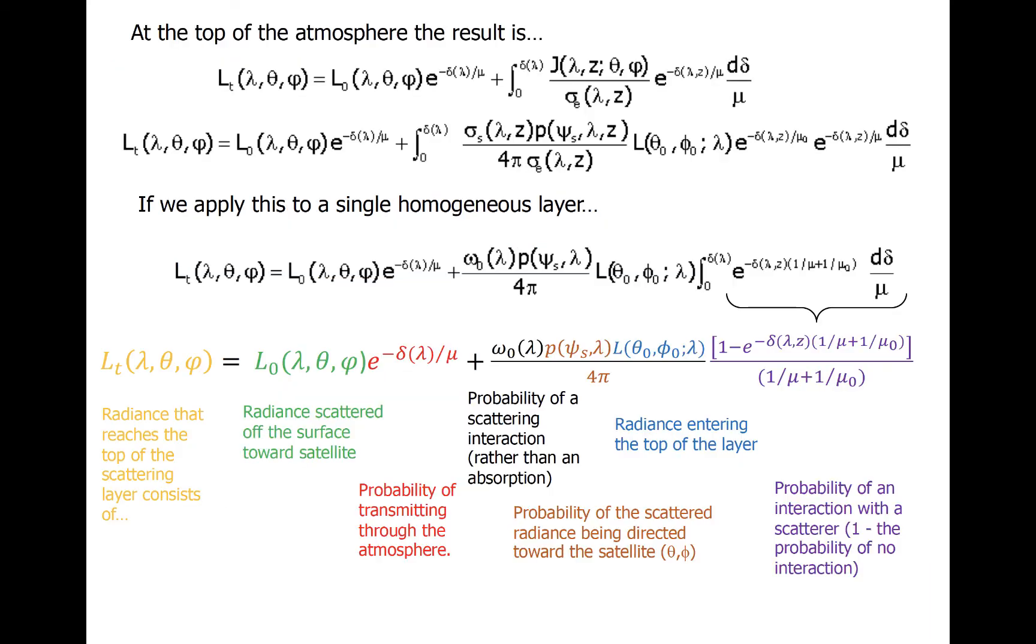We can start with our general form of Schwarzschild's equation and plug in our new expression for the source term. Note here that we have switched the sign convention for the vertical coordinate so that L sub t denotes radiation at the top of the atmosphere outbound and L sub not denotes inbound radiation that is scattered off the surface. If we assume that the atmosphere is homogeneous, we end up with what is expressed at the bottom.